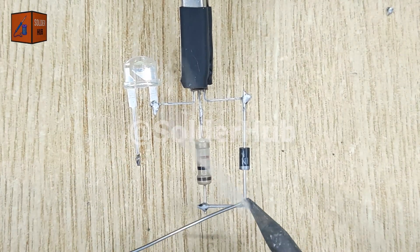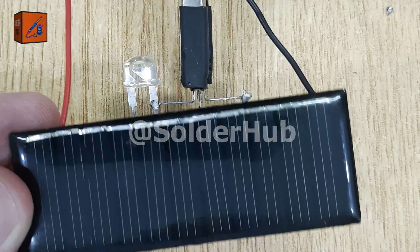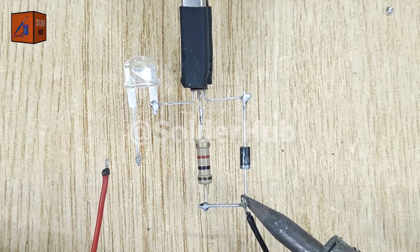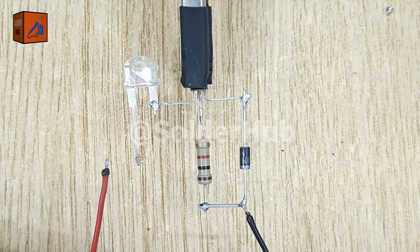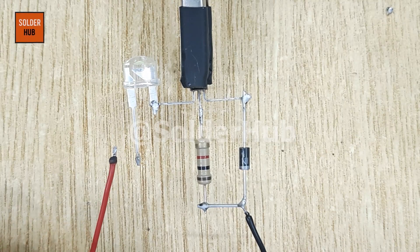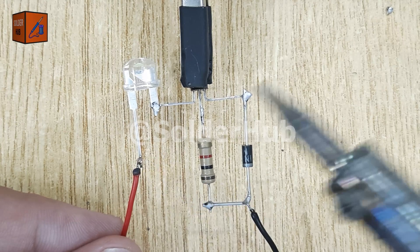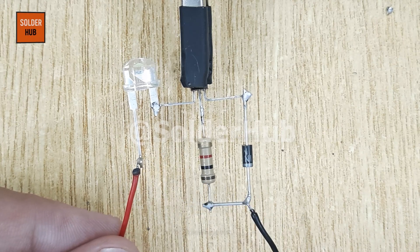Now comes the key component: a mini solar panel. This will act as a light sensor, detecting when it's day or night. I'll solder the negative wire of the solar panel to the negative pin of the diode, and the positive wire directly to the positive pin of the LED. With this, the solar panel is ready to send signals to the transistor.